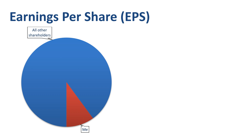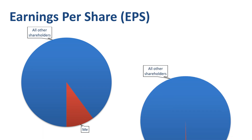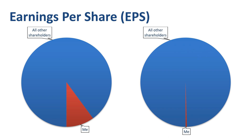If you visualize this in a pie chart: what's my share of the total net income versus that of other shareholders? One-tenth, one-hundredth, or one-billionth? That obviously depends on the number of shares outstanding.